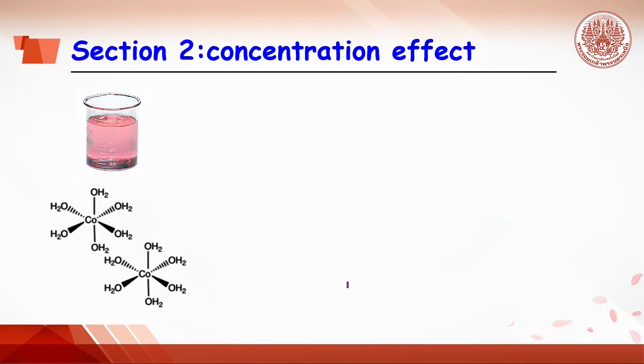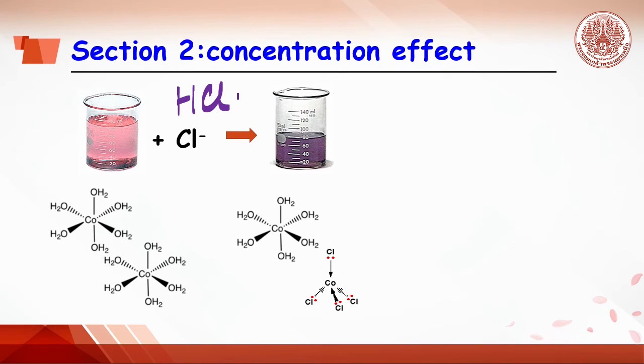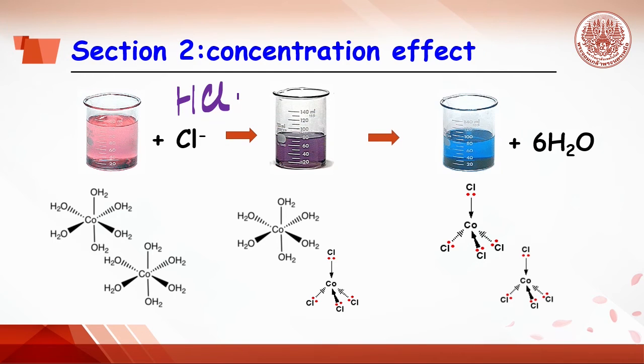Section 2 is aimed to see the color change by shifting the equilibrium position when the concentration is involved. Start from pink solution of cobalt ion. After adding hydrochloric acid, cobalt ion will replace the water molecule to get blue color. So pink and blue color will be mixed and purple color is obtained. Finally, when the cobalt ion replaces all water molecules, blue color appears. However, when water is added, the blue color also changes to pink.